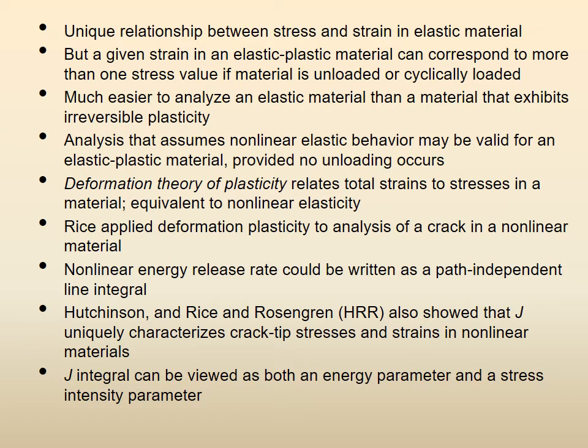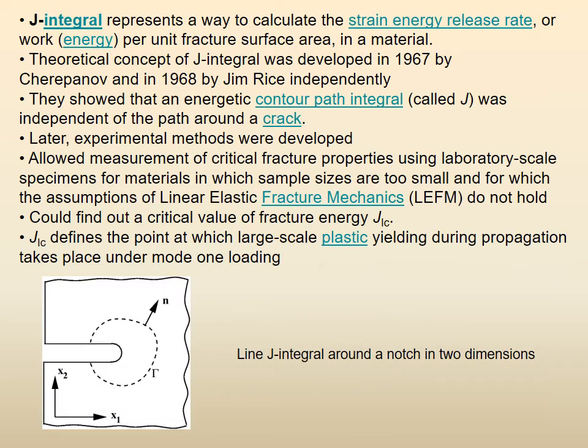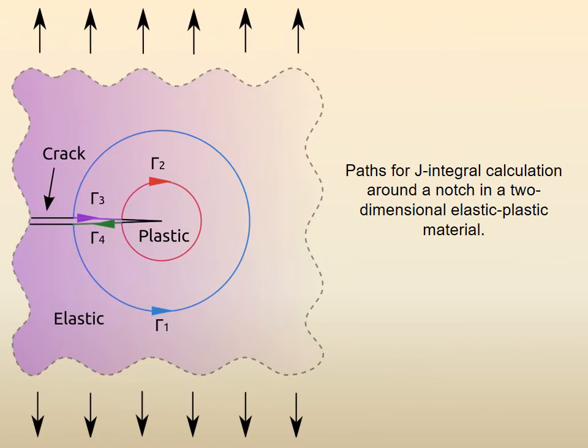We described the Rice and Rosengren method with Hutchins, and defined how the J integral is a path independent integral. We gave you a figure showing different paths gamma 1, gamma 2, gamma 3, gamma 4. If we take the integral around the crack, all of them will give you the same value.